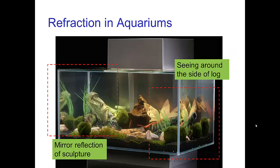Another example is refraction in aquariums. In this photo, we see two effects. On the left we see total internal reflection on the back side of the aquarium where we see a mirror reflection of the sculpture. On the right side, we see two images duplicated because of refraction.